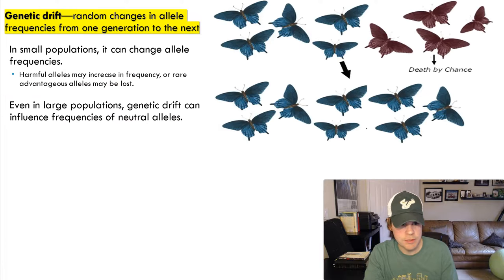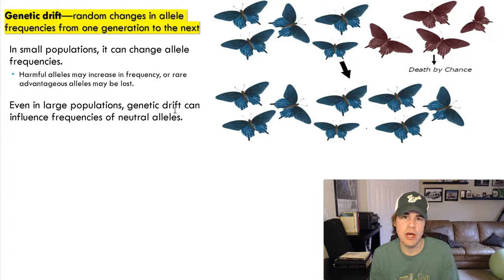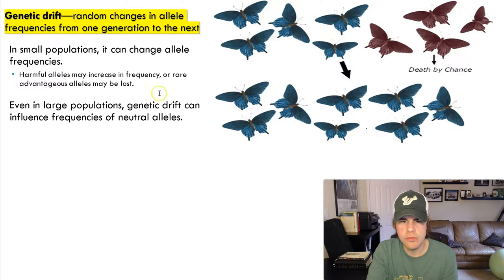Finally, genetic drift — the definition is random changes in allele frequencies from one generation to the next. In small populations, this creates really dramatic changes. For example, if these four butterflies die by chance, those alleles are lost from the generation, which leads to genetic drift.